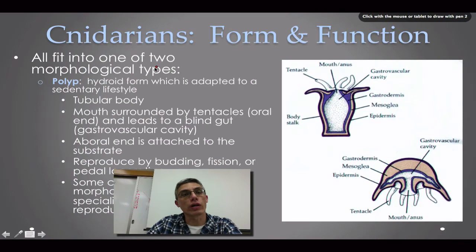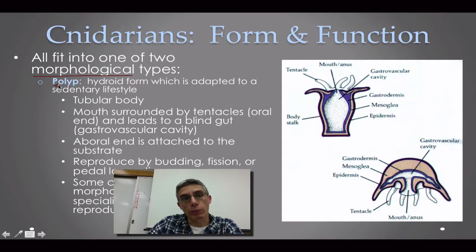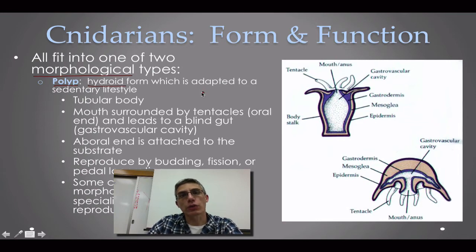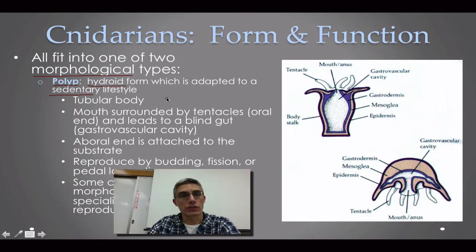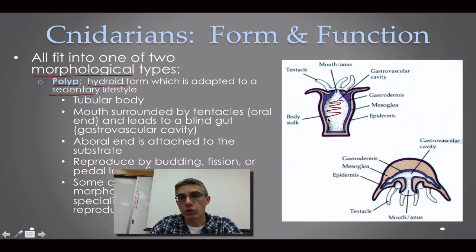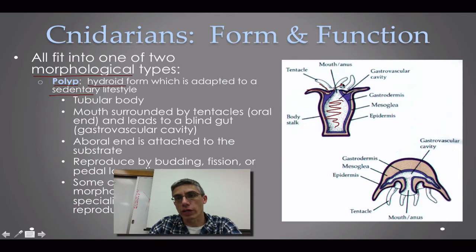Cnidarians fit into one of two morphological body forms. The first is the polyp body form, also called the hydroid form. This body form is adapted to a sedentary, or non-moving, lifestyle. These animals have a tube-shaped body very similar to the sponges from the previous chapter, with a mouth surrounded by tentacles. You can see the radial symmetry here — the center disc with tentacles radiating outward from it.